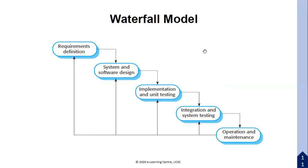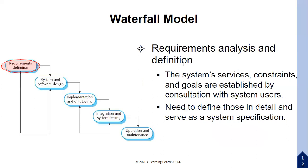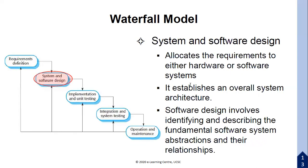In the requirements definition stage, the system services, constraints, and goals are established by consultation with system users, and defined in detail to serve as a system specification. In the design stage, requirements are allocated to either hardware or software, the overall system architecture is established, and software design involves identifying and describing the fundamental software system abstractions and their relations.